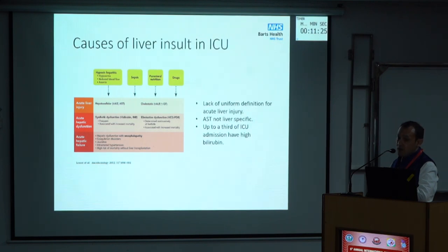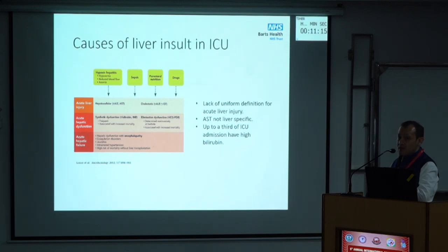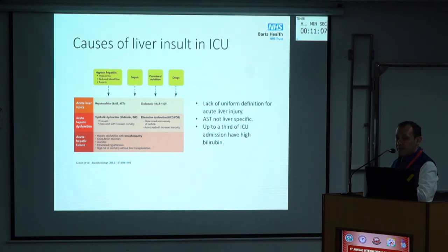Why are we worried about high bilirubin? There are causes of liver illness in ICU. There is a lack of unifying definition for acute hepatic failure in ICU. Acute liver injury is mostly hypoxia-driven, characterized by transaminitis, and with correct interventions there is a good chance of recovery. Most causes of liver damage in ICU are either hypoxic, sepsis-driven, related to total parenteral nutrition, or drugs. Acute hepatic dysfunction — where the problem is with the synthetic function of the liver — is where mortality starts significantly increasing, and most patients won't survive without a transplant.